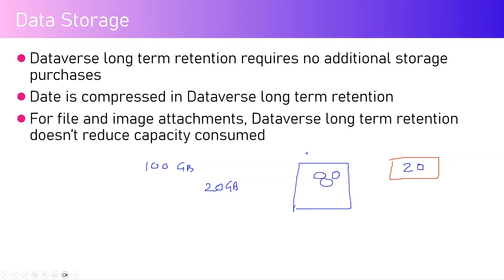Your Dataverse storage capacity will show as 80 GB plus something, because the retained data is stored in Dataverse itself in a kind of offline storage. Microsoft's documentation states to expect at least 50% compression, so if you offloaded 20 GB, it may only take 10 GB. The net effect: 80 plus 10 equals 90 GB total, giving you a net saving of 10 GB.